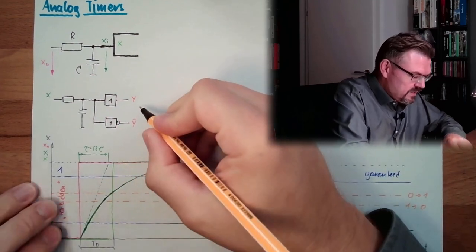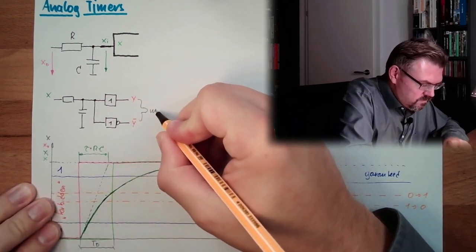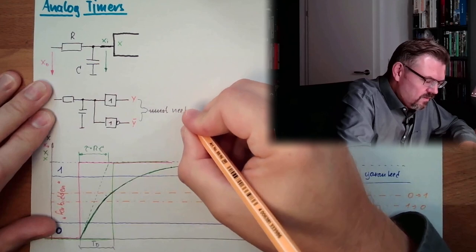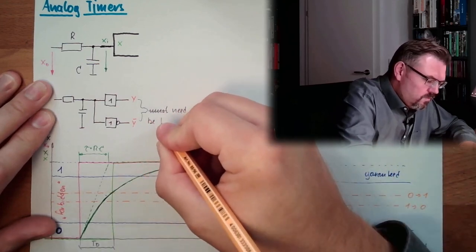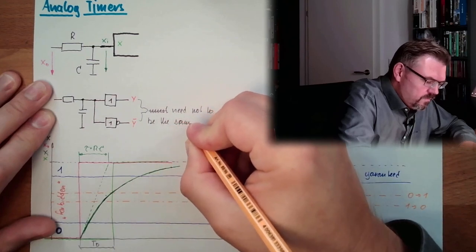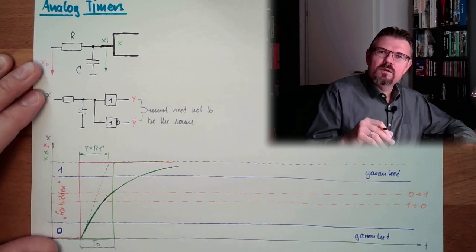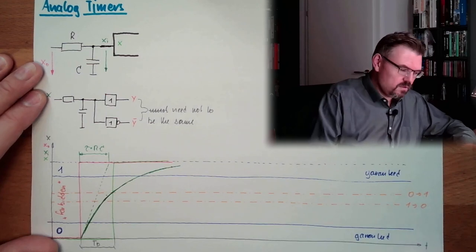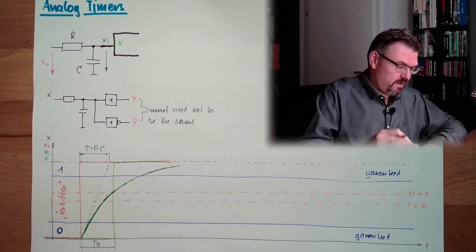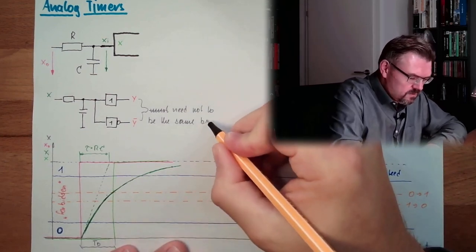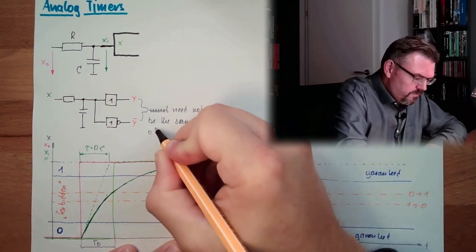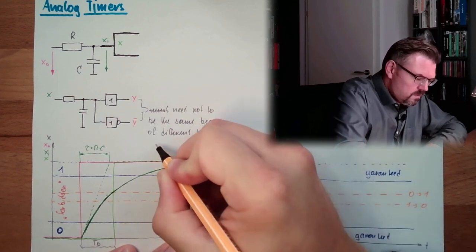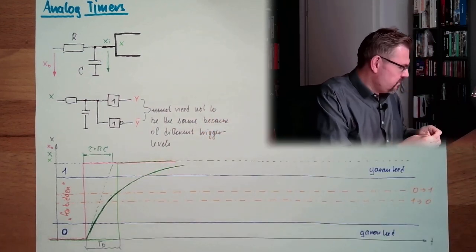All right here, must not be the same. Need, no, must not. Need not. Need to be the same. This was a false friend, because in German, must nicht means you don't need to, and in English, must not means you really have to. You have to, you don't really don't have to, of course. Must not be the same, because of different trigger levels. These are the trigger levels here.